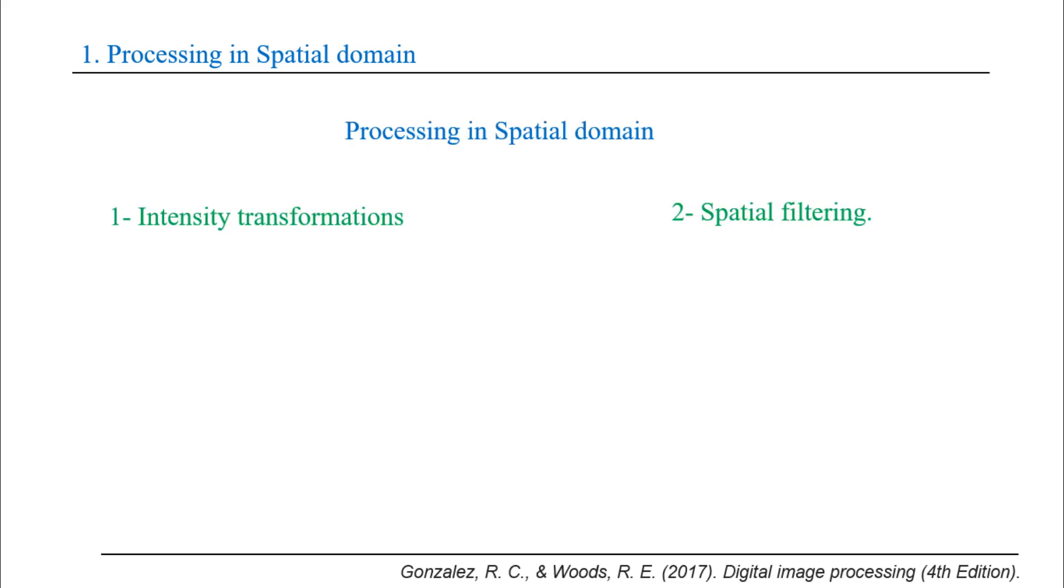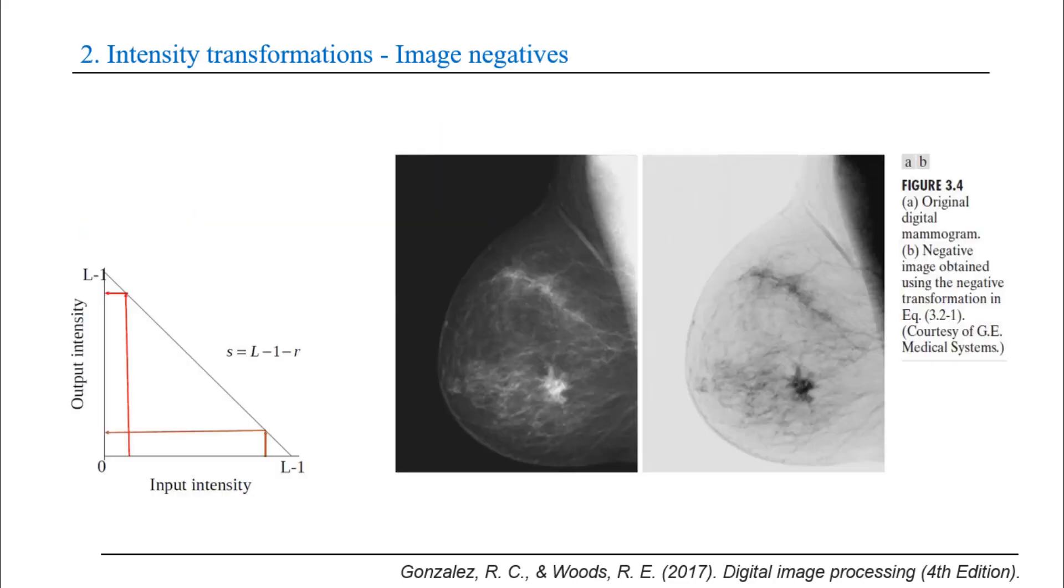Firstly, we will start with image negatives. We can take the negative of an image by inversing pixel values, so the white pixels in the image become black and black pixels become white.